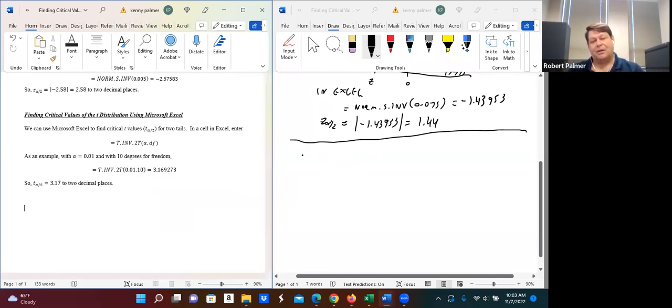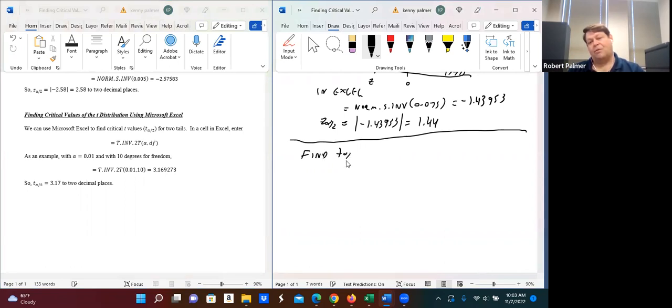So let's actually do an example of that. Let's find t of alpha over 2, let's say for 85% confidence, and let's say degrees of freedom is 20. Now, of course, depending on how many degrees of freedom we have, that's going to change your value.